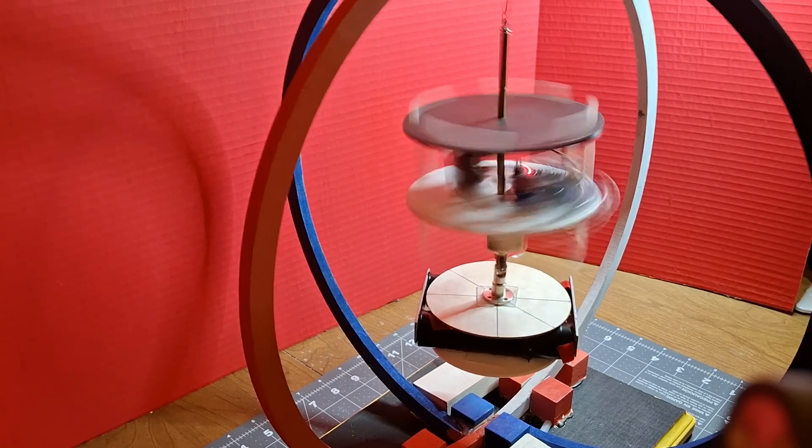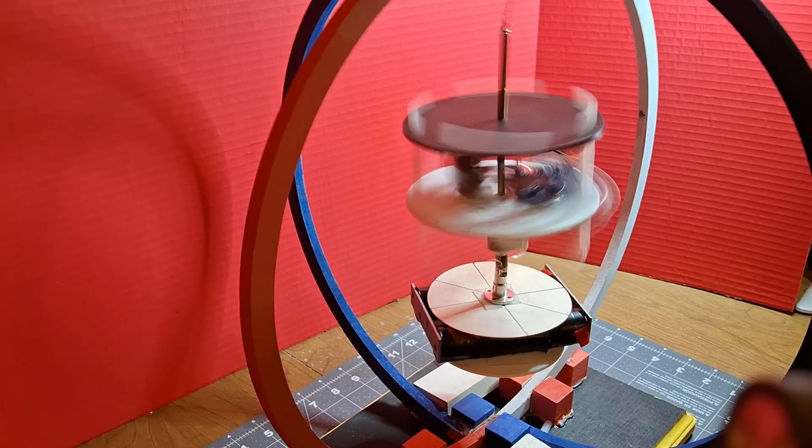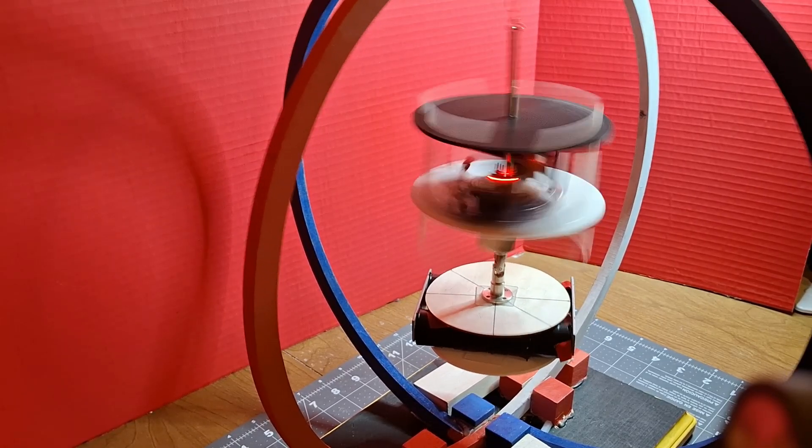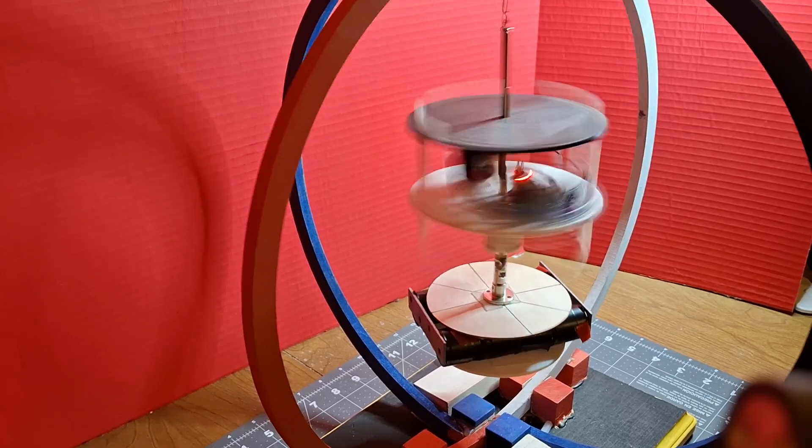Magnets are often used in satellites for reaction control, to orient the satellites and usually stop them from tumbling when they are first released into orbit.